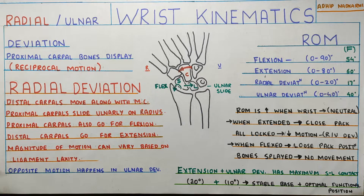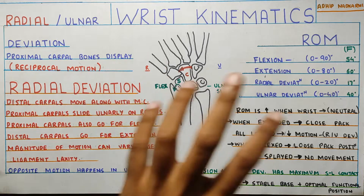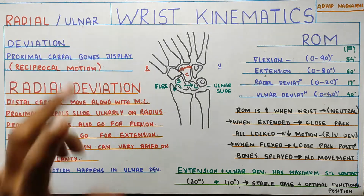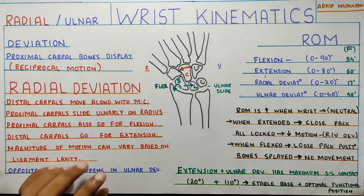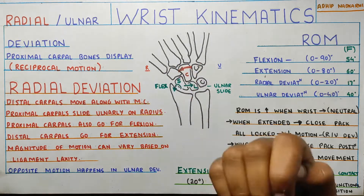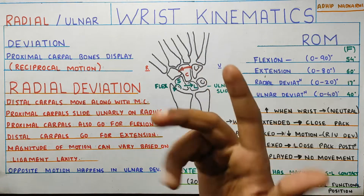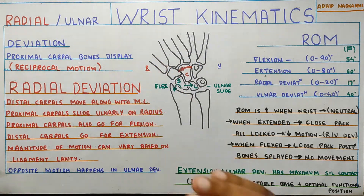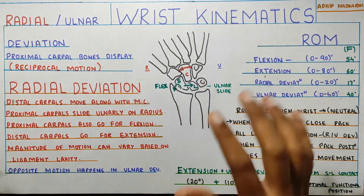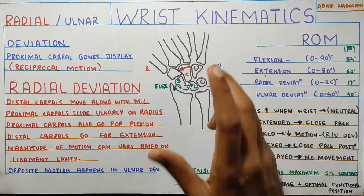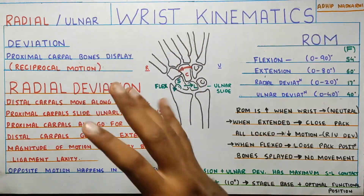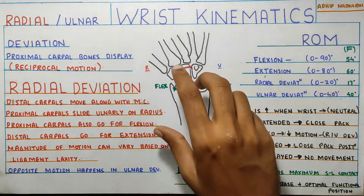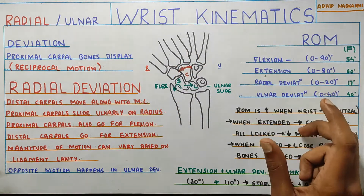In this video we are going to talk about wrist kinematics part 2, where we'll be discussing radial and ulnar deviation. Last video I talked about flexion and extension, and this video will finish the kinematics of the wrist joint. One thing I did not cover in the kinematics was the normal range of motion seen at the wrist joint, so I'll cover that too.